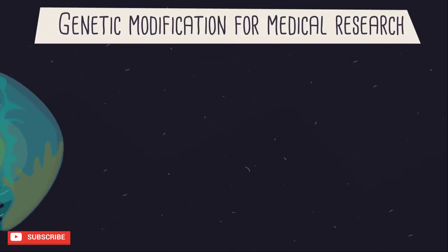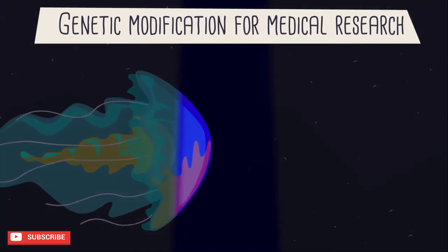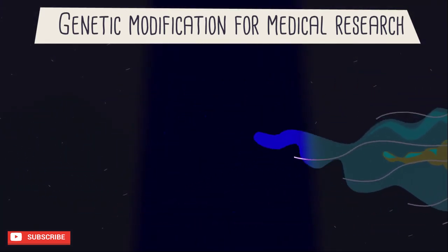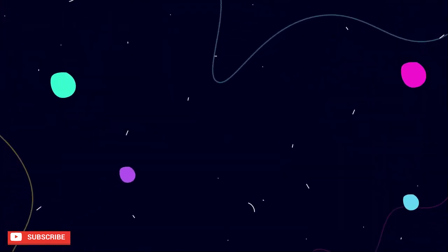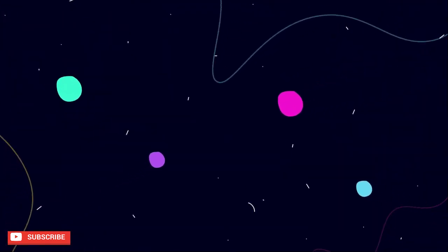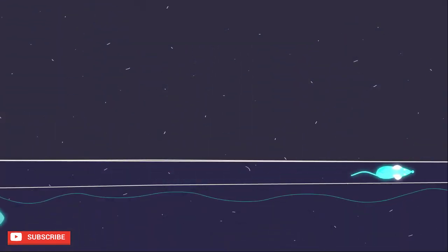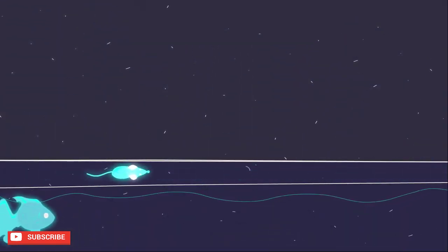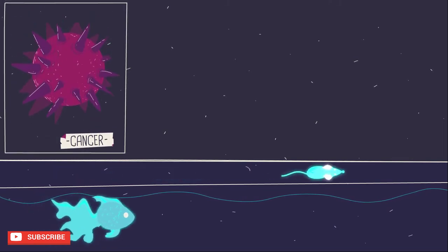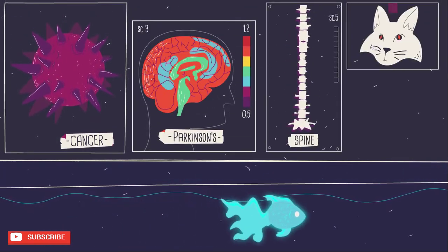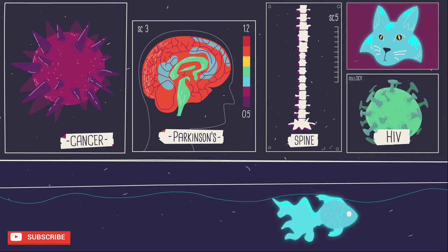Scientists have used genetic modification to introduce genes that glow under UV light — such as from jellyfish — into other animals for medical research. This may seem totally useless, but being able to see certain cells in the dark has led to a lot of scientific discoveries. Glow-in-the-dark mice and fish have helped scientists make breakthrough research into treating cancer, Parkinson's, and spinal cord injuries, and glow-in-the-dark cats have been used for HIV research.